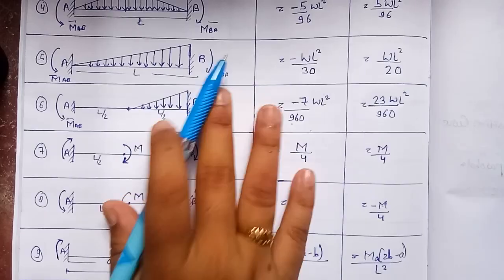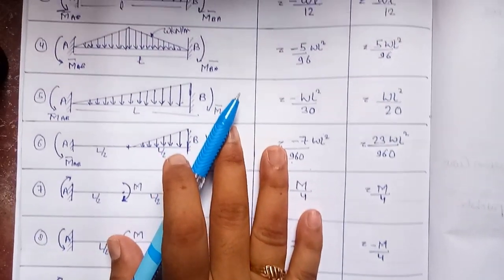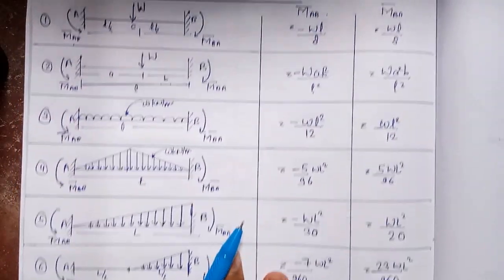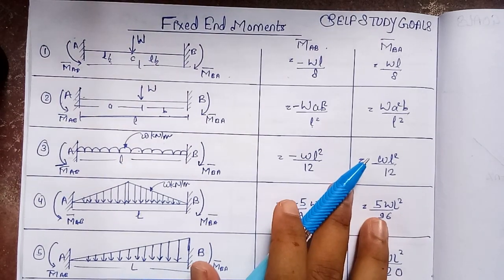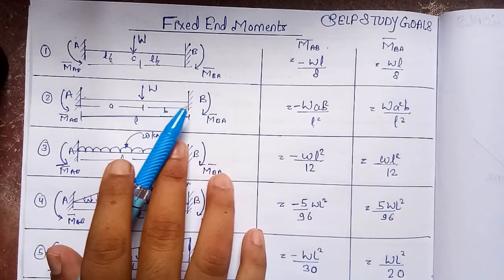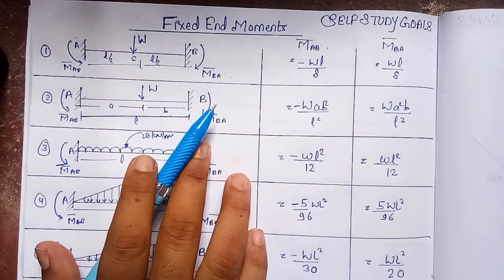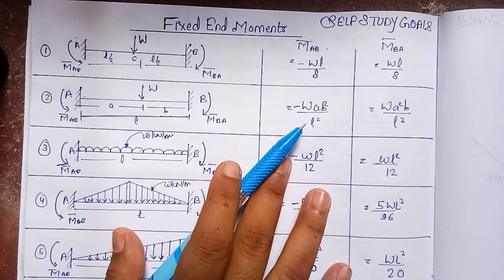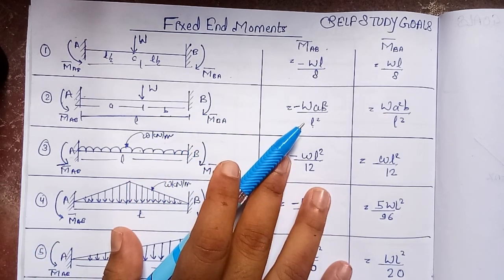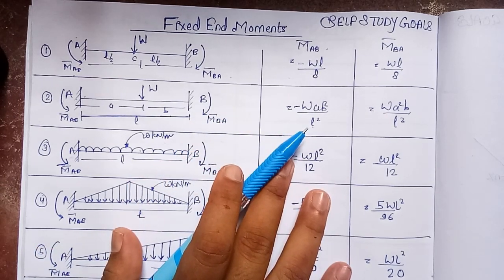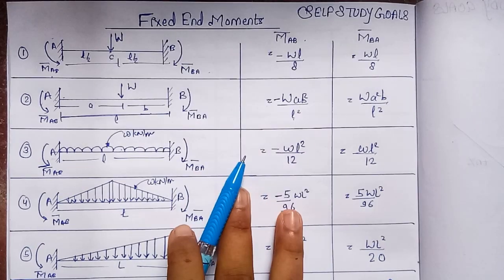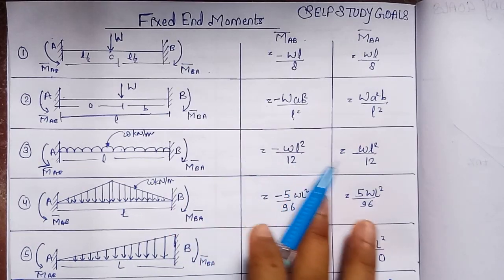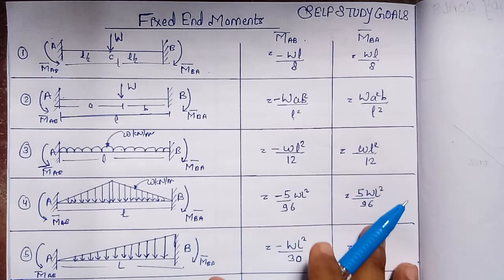These are the different cases of fixed end moments, which are helpful for solving slope deflection equations and the moment distribution method, and are commonly asked in state-level competitive exams. In the next lecture we will see the standard results of the slope deflection method. If this video was helpful, please like, share, and subscribe to the channel. Thank you.